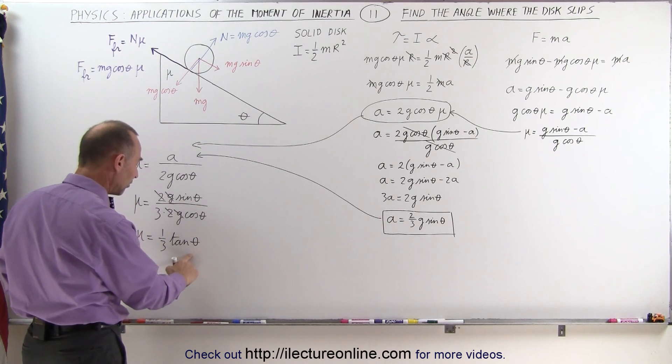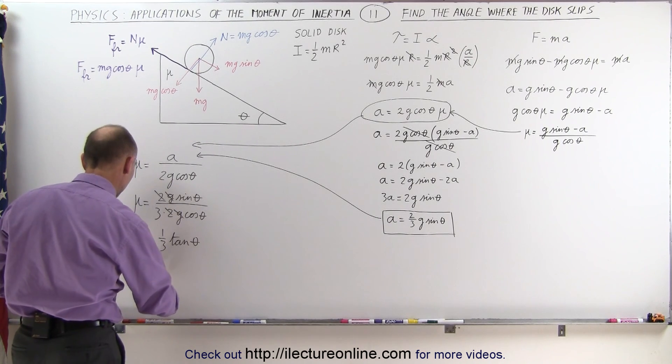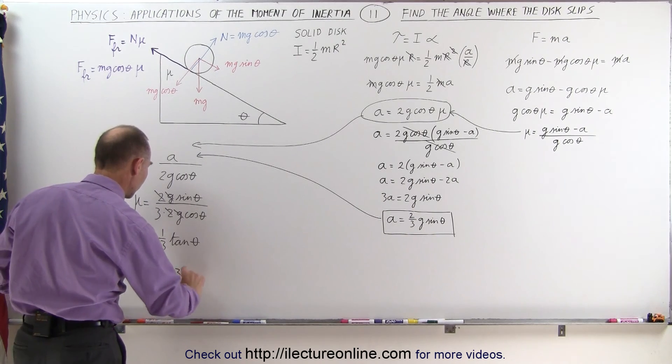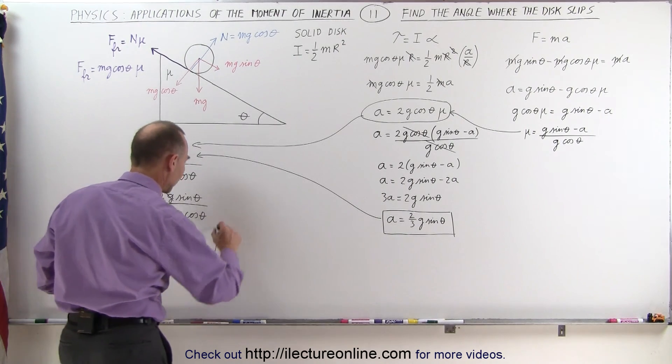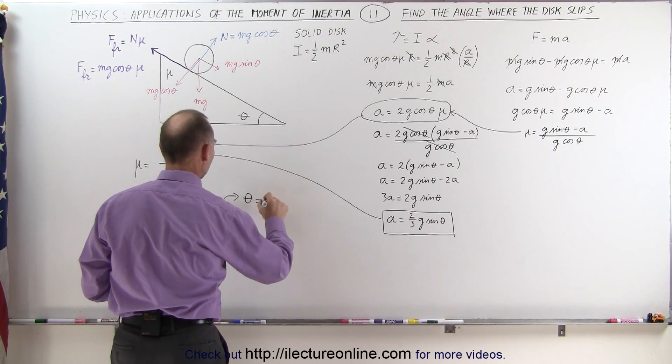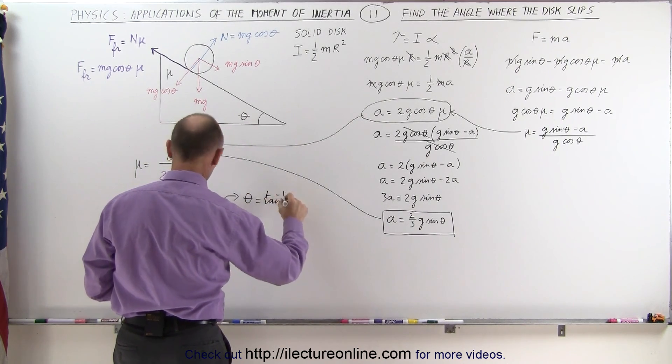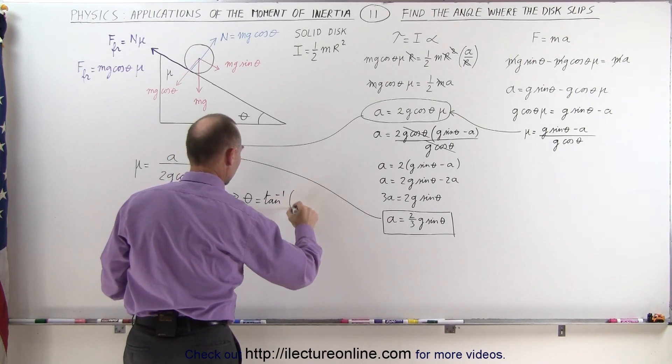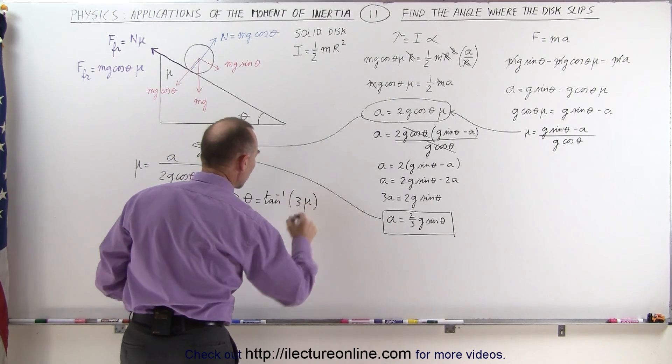Now if we solve this equation for the tangent of theta, we get the tangent of theta is equal to three times mu. And then if we take the arc tangent, we can now say that theta, the angle, is equal to the inverse tangent of three times mu.